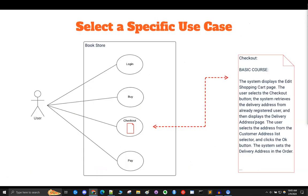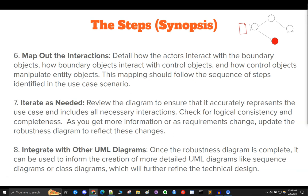Number seven, iterate as needed. Review the diagram to ensure it actually represents the use case and includes all necessary interactions. Check for logical consistency and completeness. As you get more information or as requirements change, update the robustness diagram to reflect those changes. You're looking at all the different permutations that run through your use case — sometimes there are alternates, extensions, and options you have to consider, and you can trace through those with a good robustness diagram.